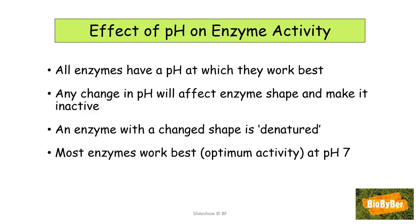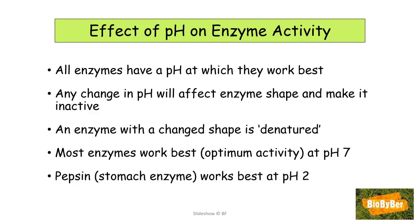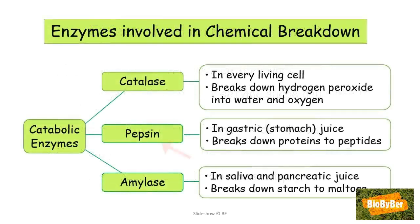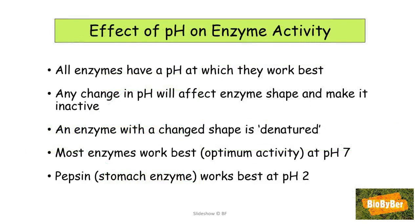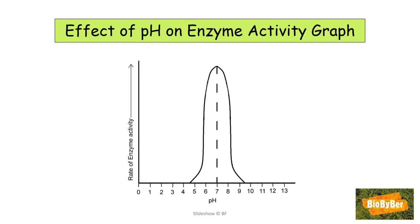Most human enzymes work best at a pH of 7. The pH of animal blood is 7.4, and even a slight change can cause health problems. Other human enzymes have different optimum pH values — for example, pepsin is a stomach enzyme, a catabolic enzyme that breaks down proteins to peptides. Because it acts in the stomach, the pH at which it works best is approximately 2.